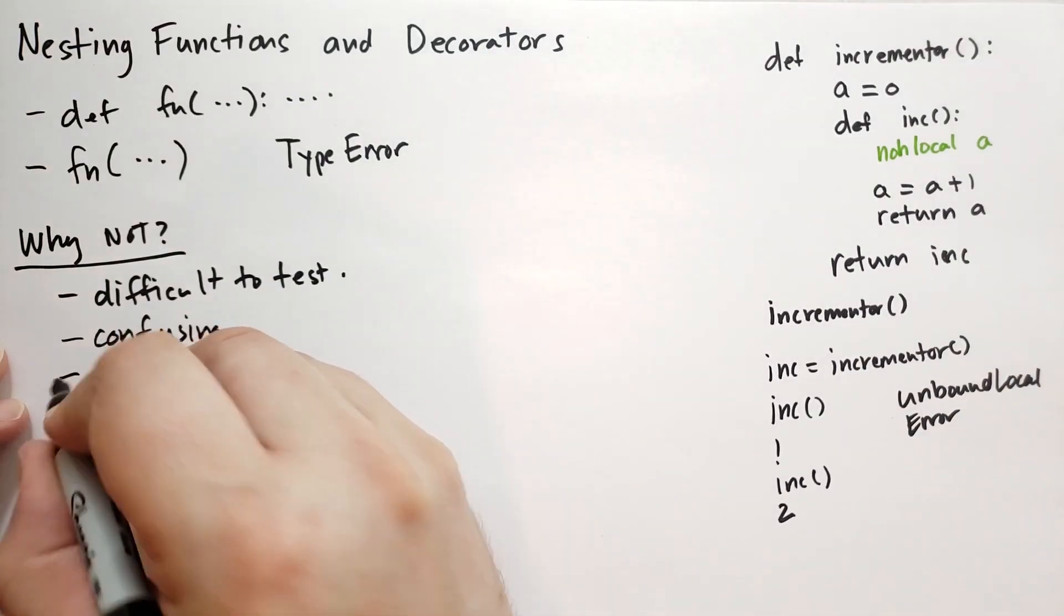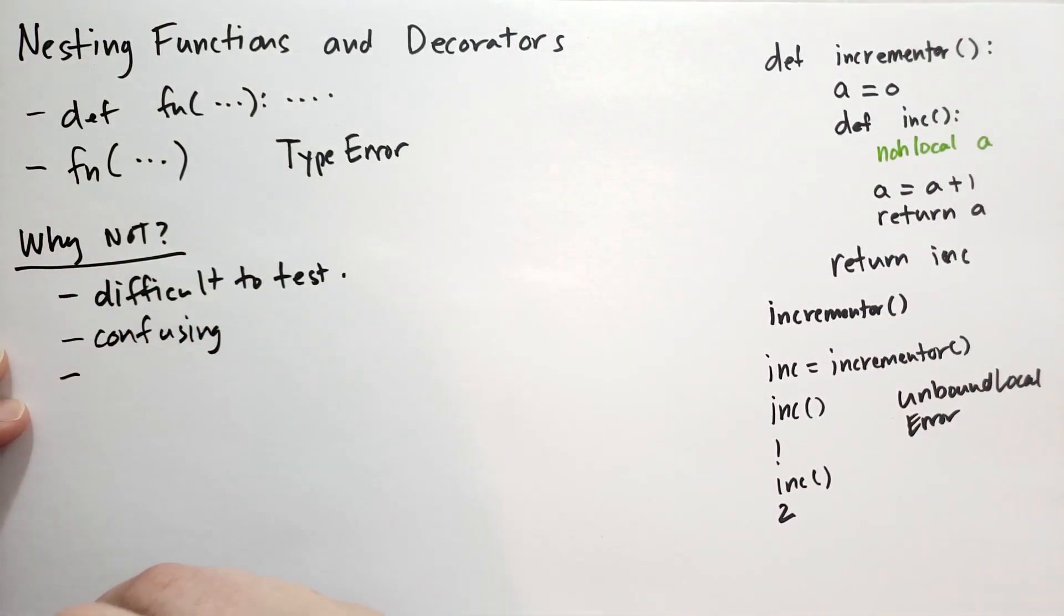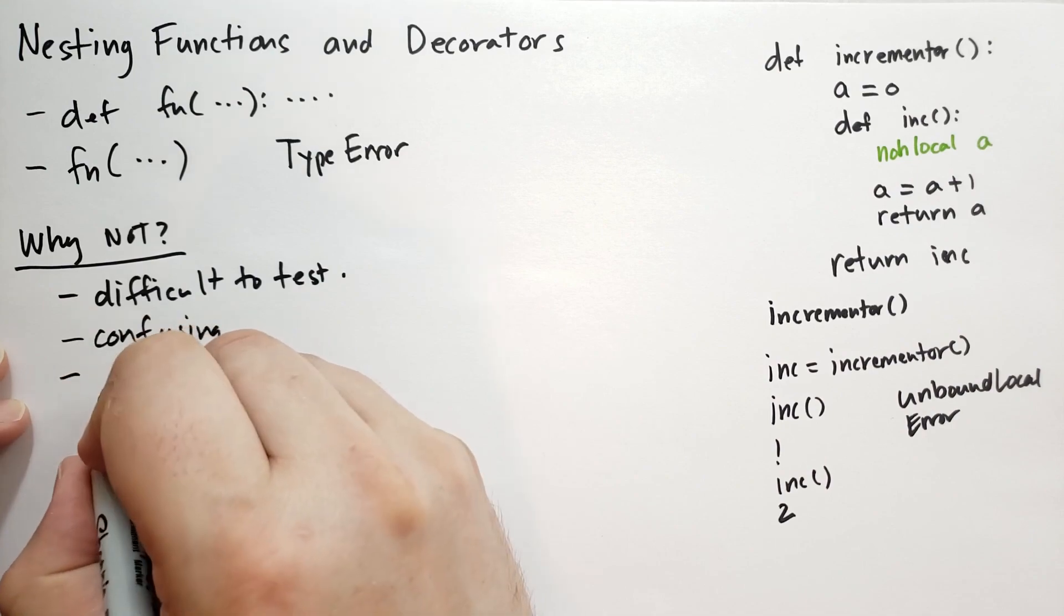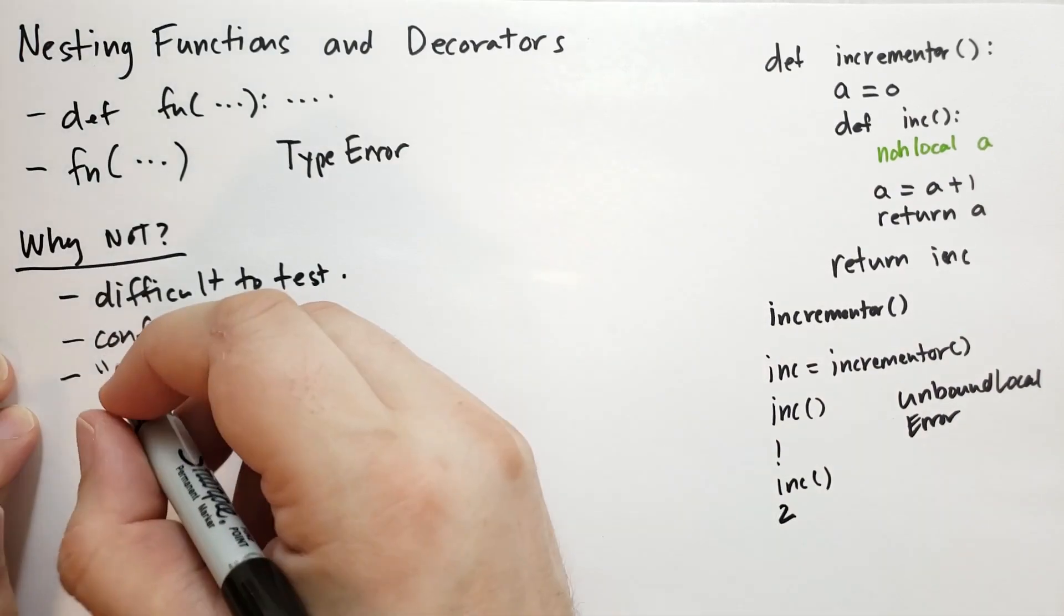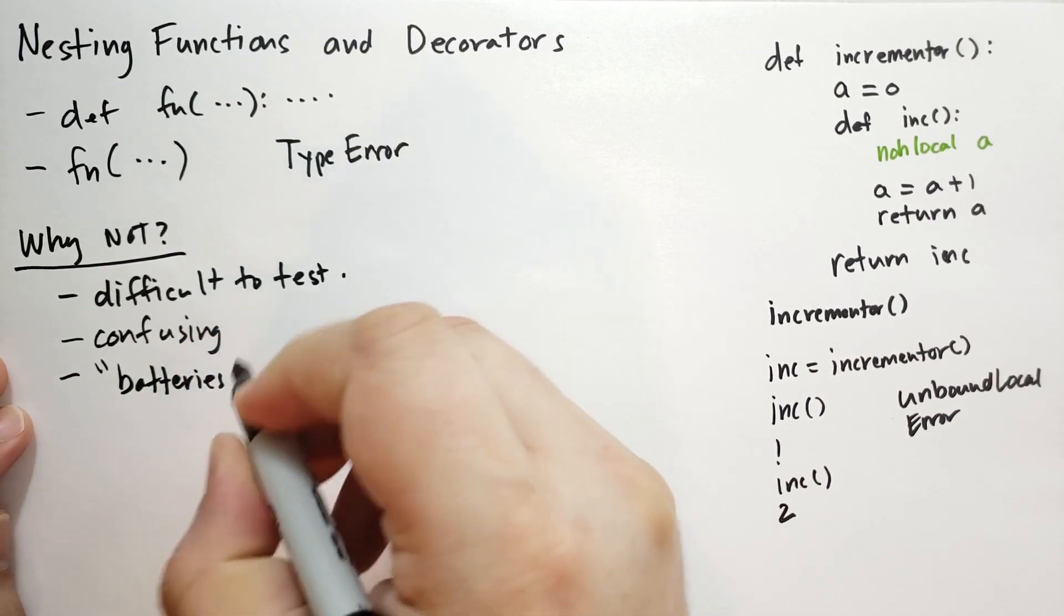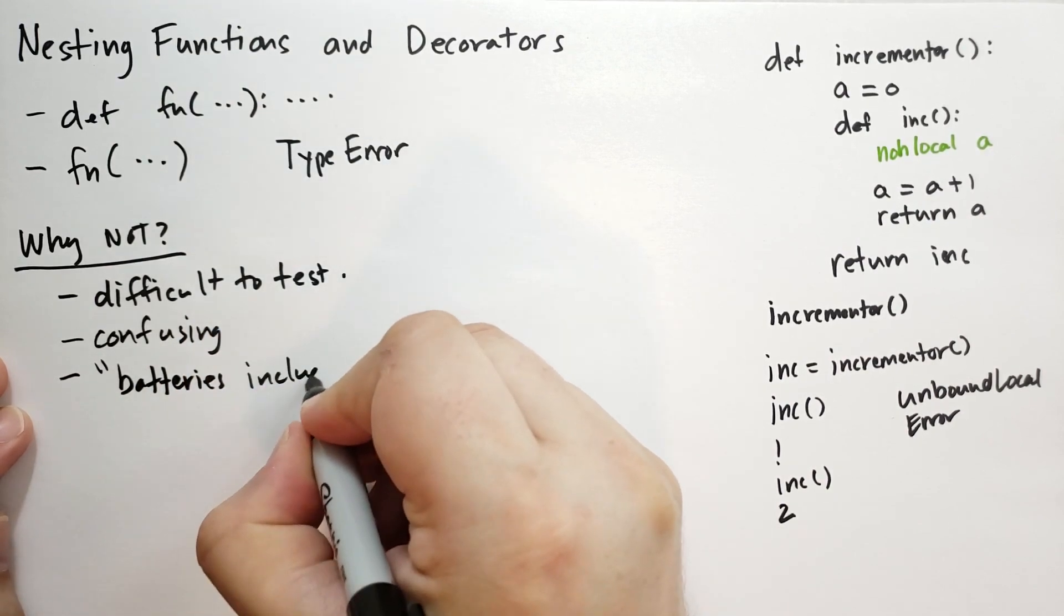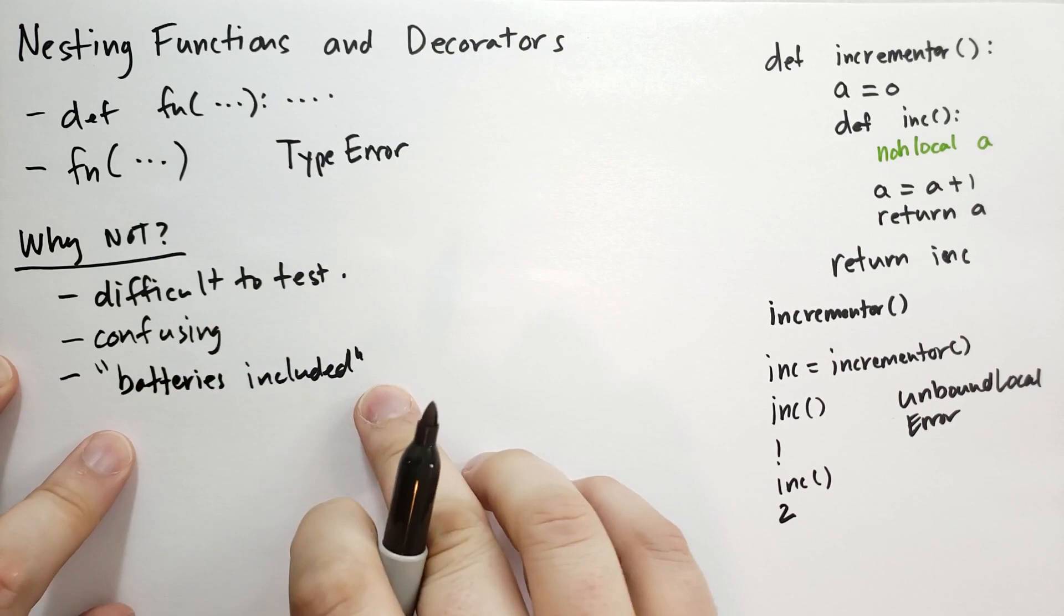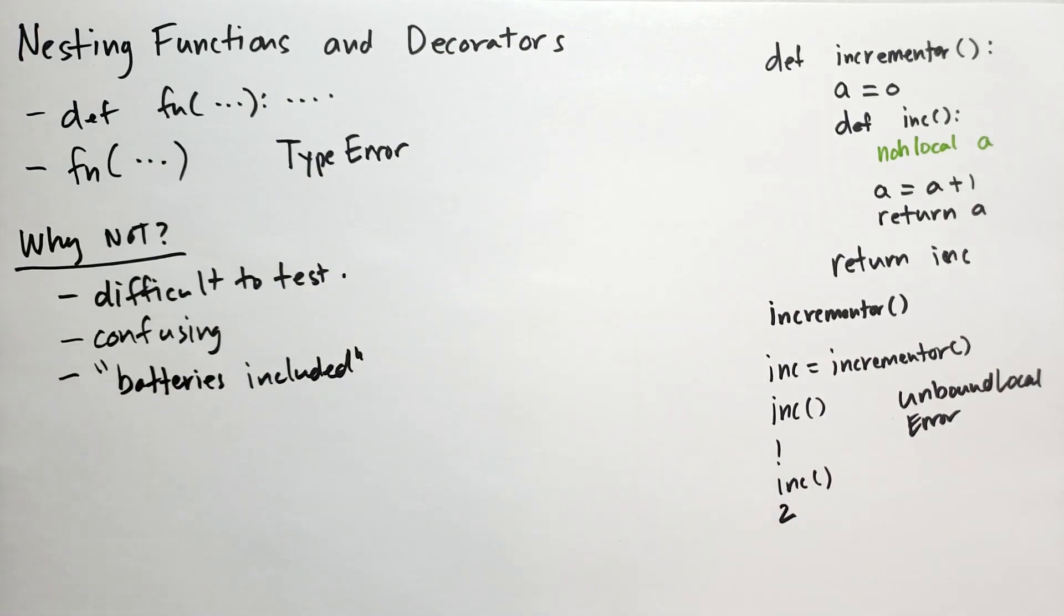And there is lots of mechanisms that exist, batteries included. It's one of the phrases of Python. Batteries included. And what that means is that Python already has several functions and features in place that makes writing these functions that generate function pretty much unnecessary. And we'll cover those when we go over functional programming in the future.